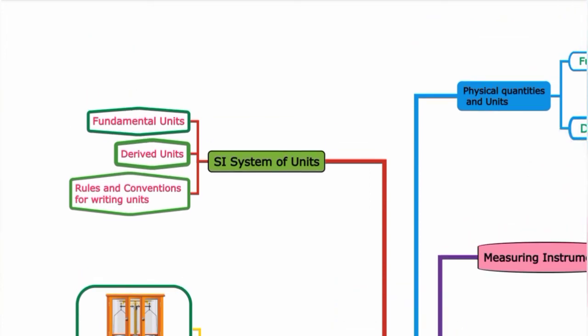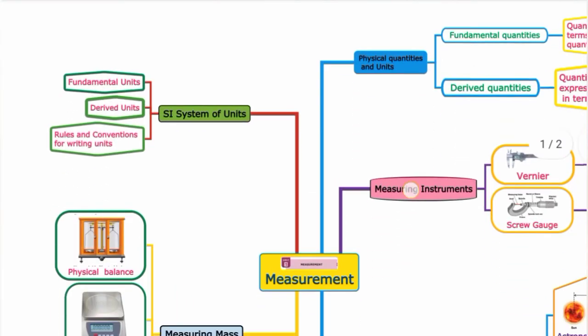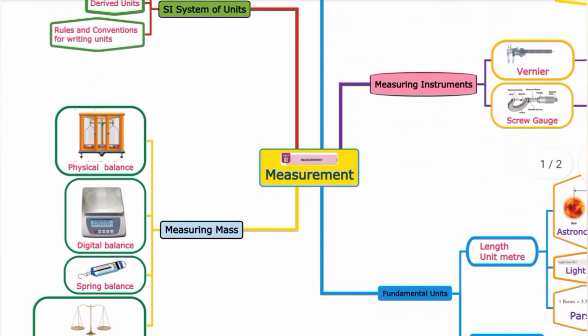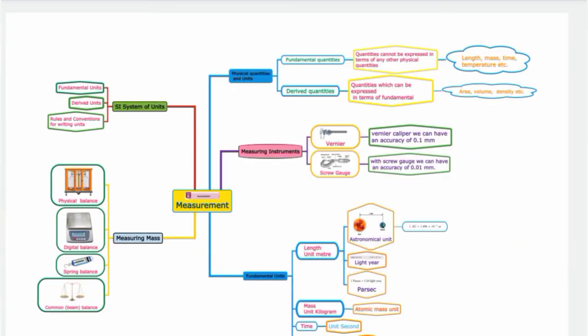SI system includes fundamental units, derived units, and rules and conventions for writing units. This is the overall simple mind map for 9th Standard Unit 1 Measurement. The next lesson mind map will be in the next video. Thank you for your support, thanks for watching.